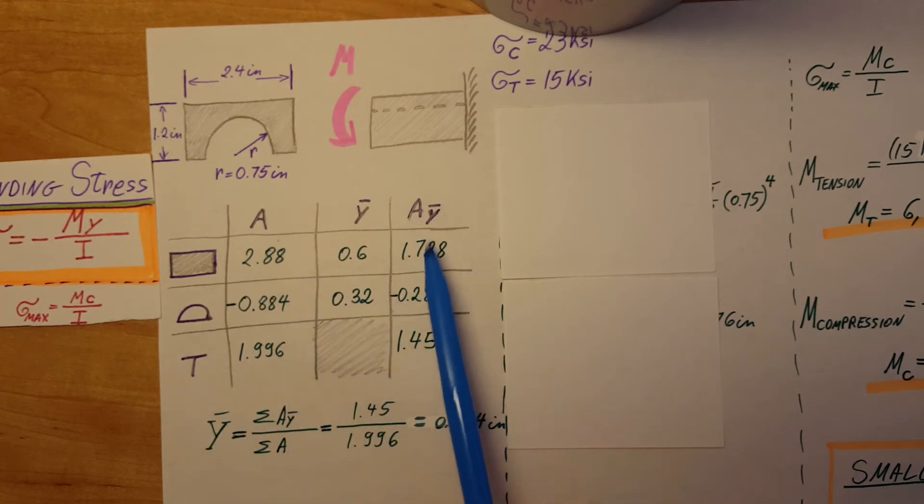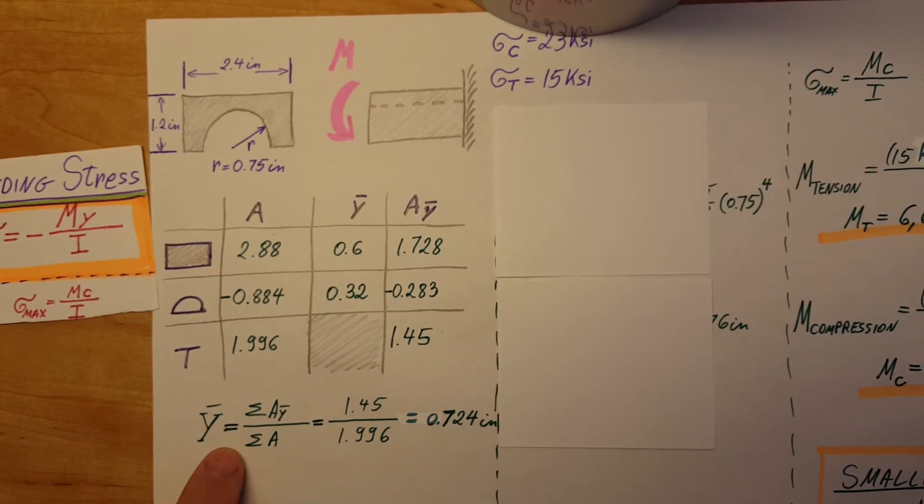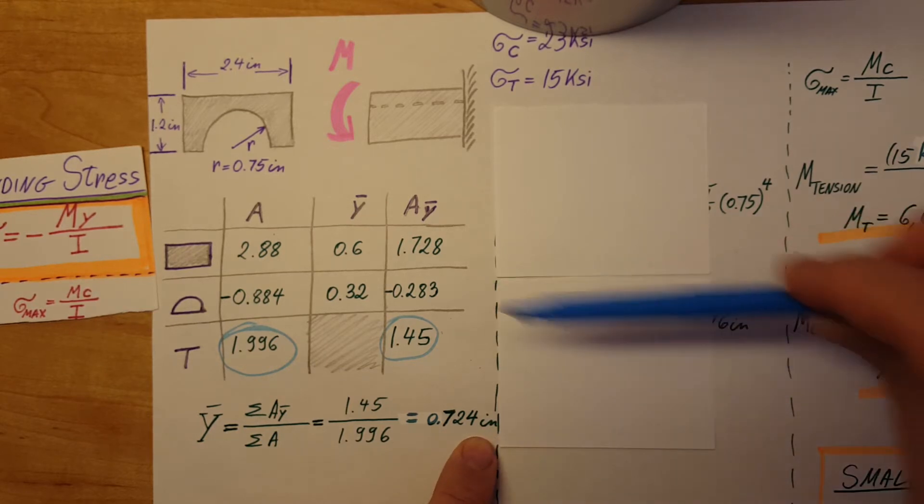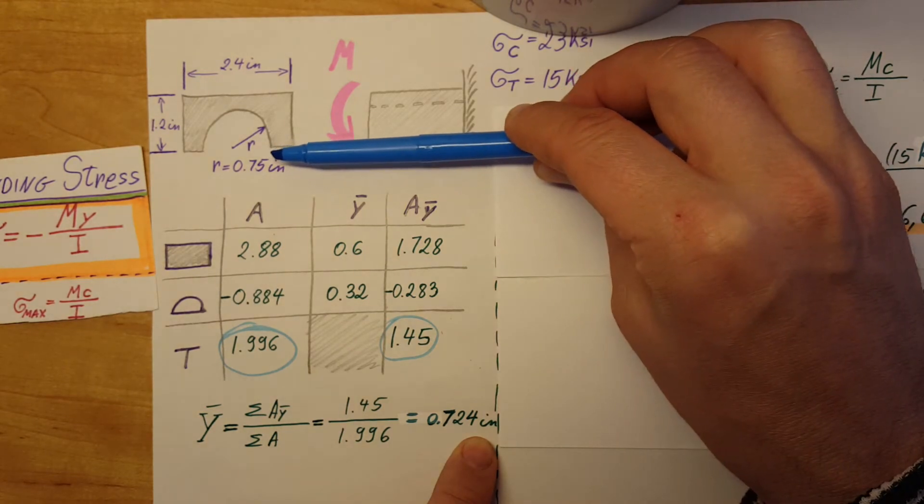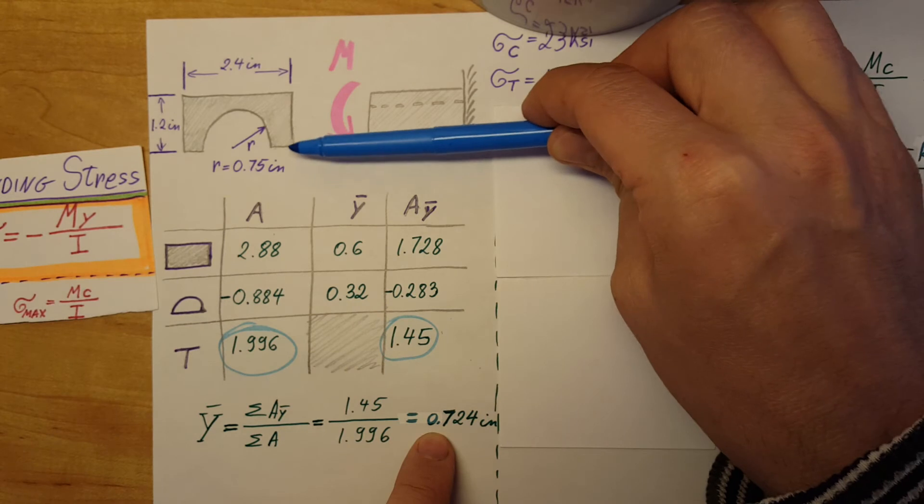Add up the areas, add up this one, and use the formula for our total Y bar: sum of AY's divided by sum of the areas. We finally found 0.724 inches, which will be our neutral axis from the bottom up.